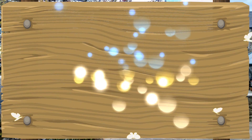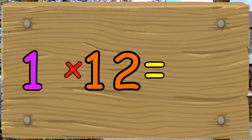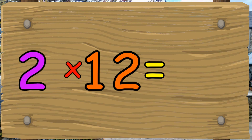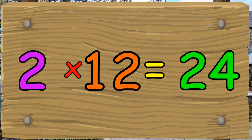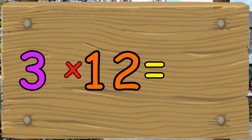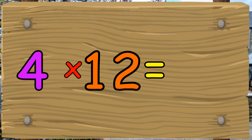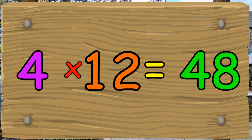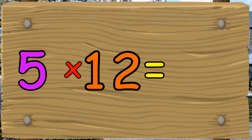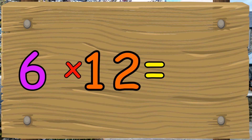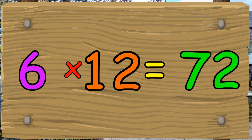Let's try that again. 1 times 12 equals 12, 2 times 12 equals 24, 3 times 12 equals 36, 4 times 12 equals 48, 5 times 12 equals 60, 6 times 12 equals 72.